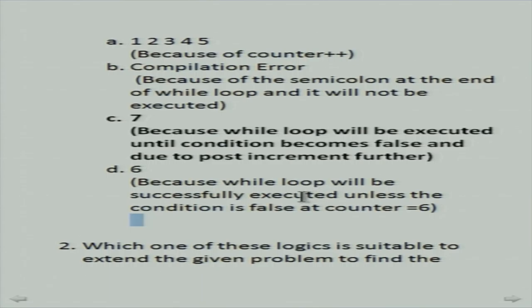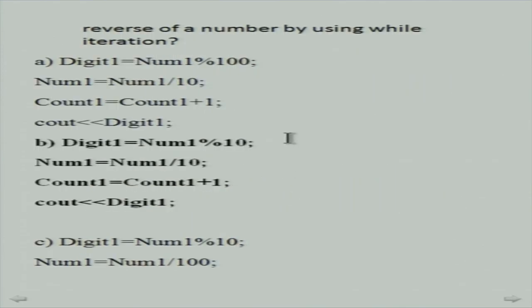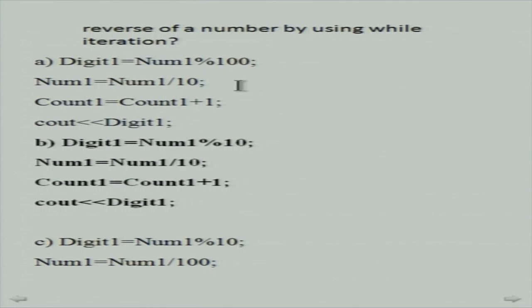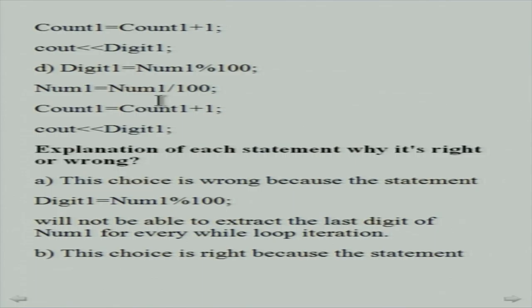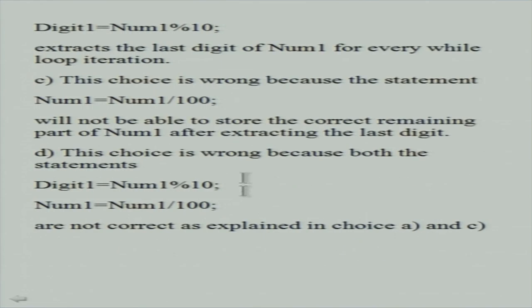The second quiz question asks which logic is suitable to extend the given problem to find the reverse of a number using while iteration. One group member spent more than an hour forming this problem and executed it n number of times. Four options are given with logic snippets like 'digit = number mod 100'. After each option, an explanation is given for why it is the right or wrong answer — for example, taking mod 100 will only extract a single digit.